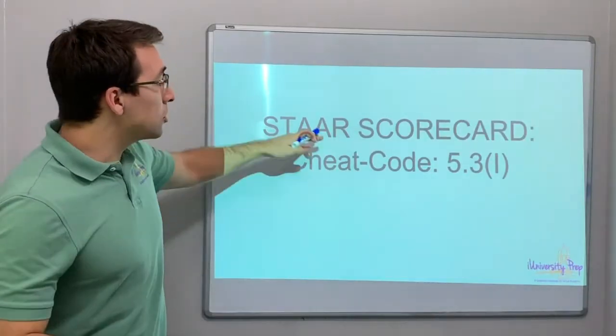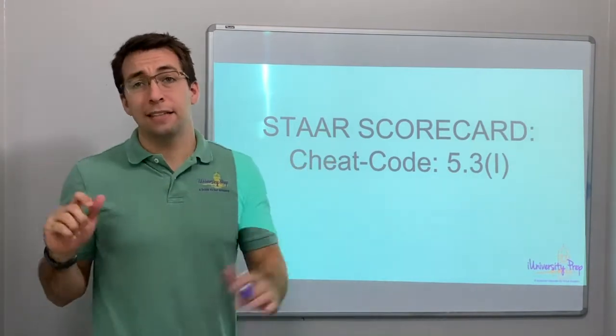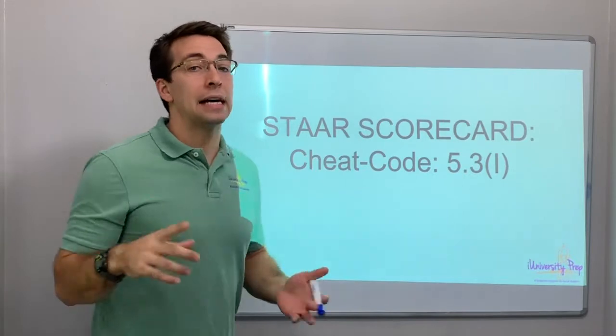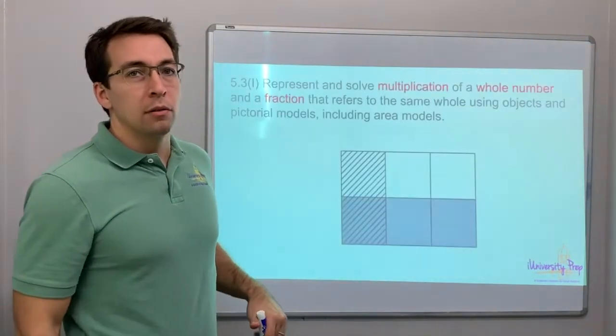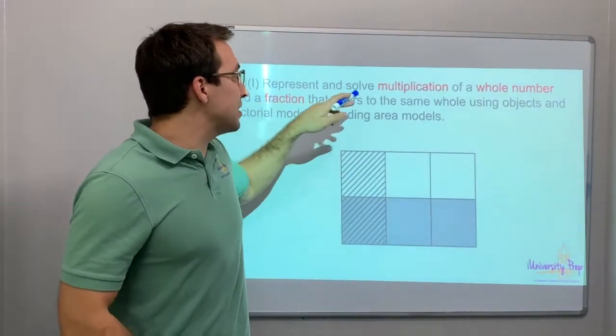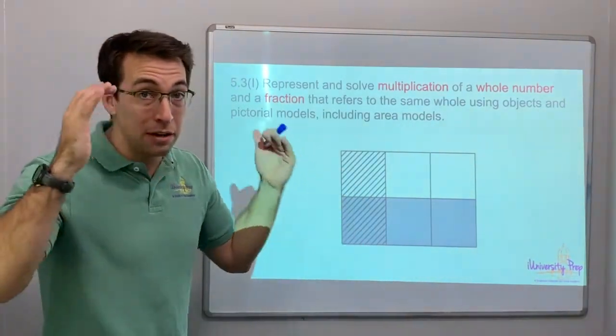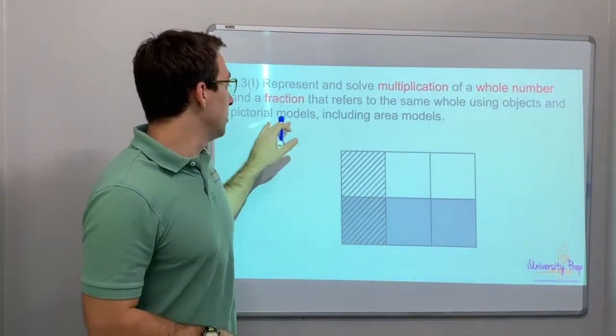Hey everyone! STAAR Scorecard, Cheat Code 5.3i. What are we talking about? We're talking about representing and solving multiplication of a whole number and a fraction using models, using pictorial models. This is pretty cool.